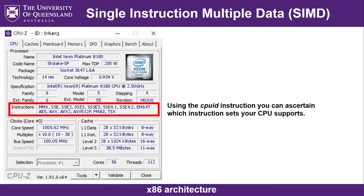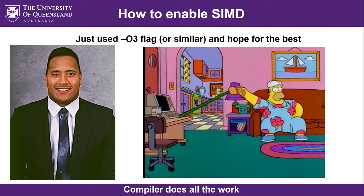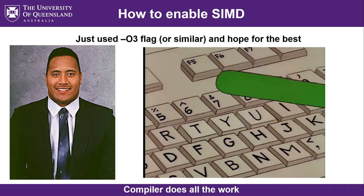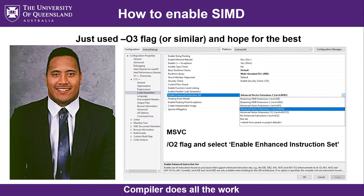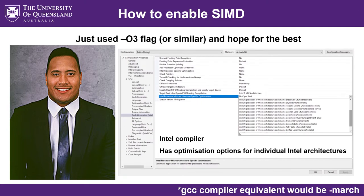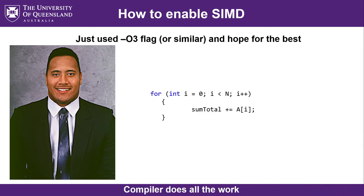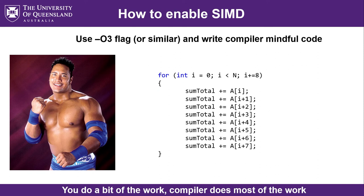So how do we actually leverage those powerful instructions to create high-performance code? The simplest way is to just set up your compiler to enable vector optimizations — for example, using the O3 flag in GCC, or in the Microsoft compiler, specifying O2 and enabling enhanced instruction sets. The Intel compiler lets you target individual processor micro-architectures. But without any effort on your part, the amount of vectorization the compiler will typically employ by itself is pretty limited. The next step up is to still rely heavily on the compiler but write your code in a way that's mindful of vectorization — for example, unrolling your loops by a factor of 4 or 8. But in my experience, it typically gives pretty sub-par results — the compiler still struggles to really vectorize it properly.